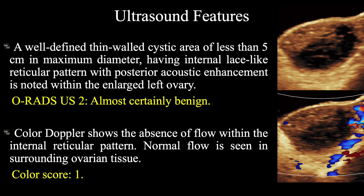So in summary, a well-defined thin-walled cystic area of less than five centimeters in maximum diameter having internal lace-like reticular pattern with posterior acoustic enhancement is noted within the enlarged left ovary. Color Doppler shows absence of flow within the internal reticular pattern, and normal flow is seen in surrounding ovarian tissue. These features concluded as a case of left ovarian hemorrhagic cyst, given an O-RADS ultrasound score of 2 with a color score of 1, indicating an almost certainly benign condition.